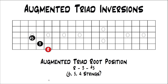We're going to start on the 6th, 5th, and 4th string in root position. If you watched the other lessons on inversions, you know how to move up to the next inversion — you would just take each of these notes, move them up to the next closest interval, and that would become your new inversion with a different shape. With augmented, it's different. You still move them up to the next closest interval the same way as before, but the shape isn't going to change because it's a symmetrical chord.